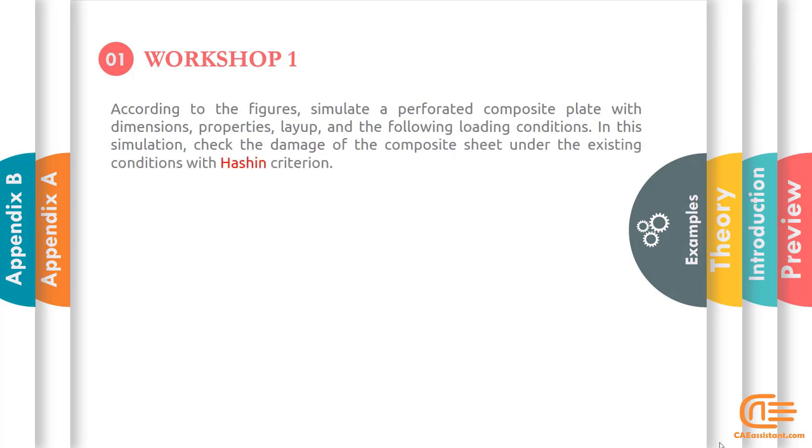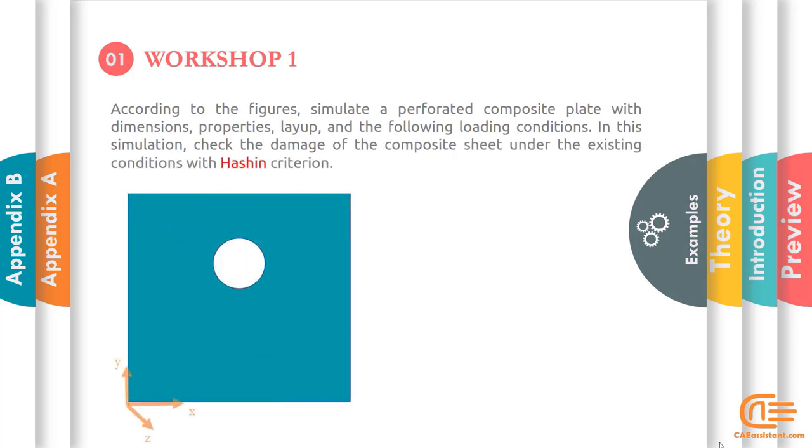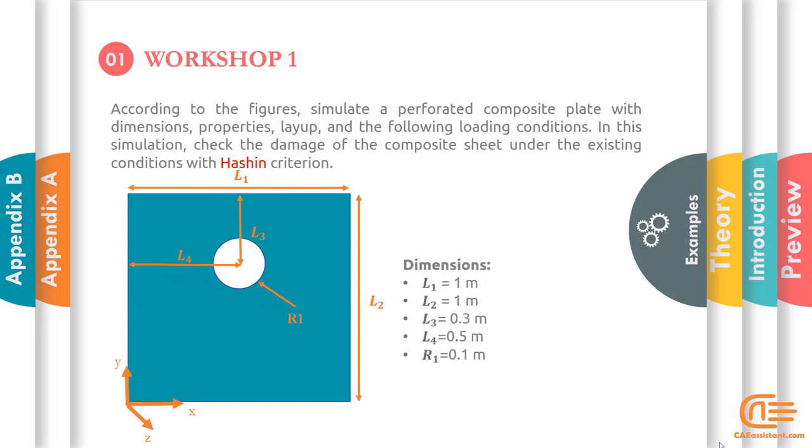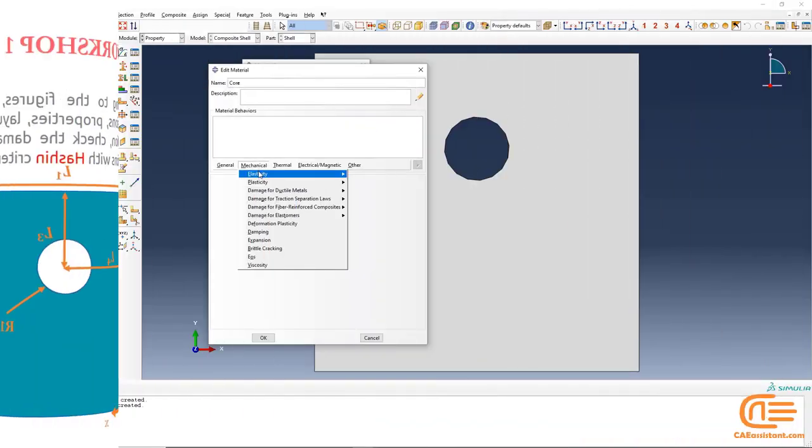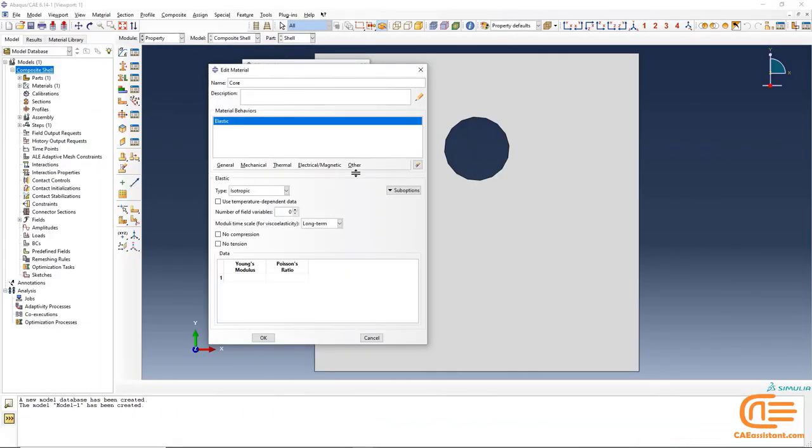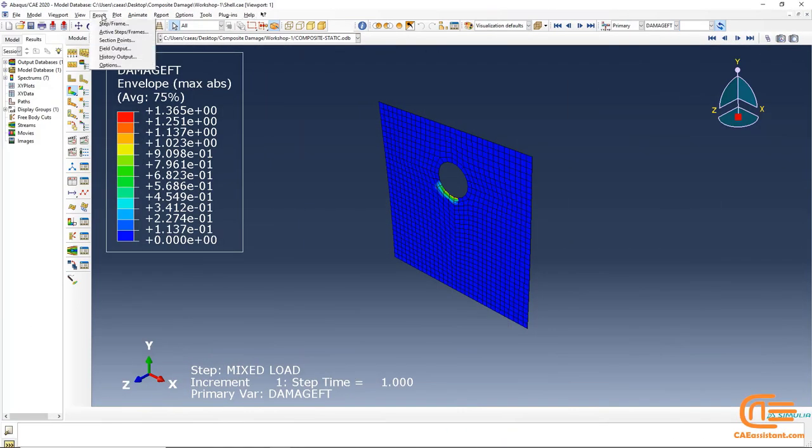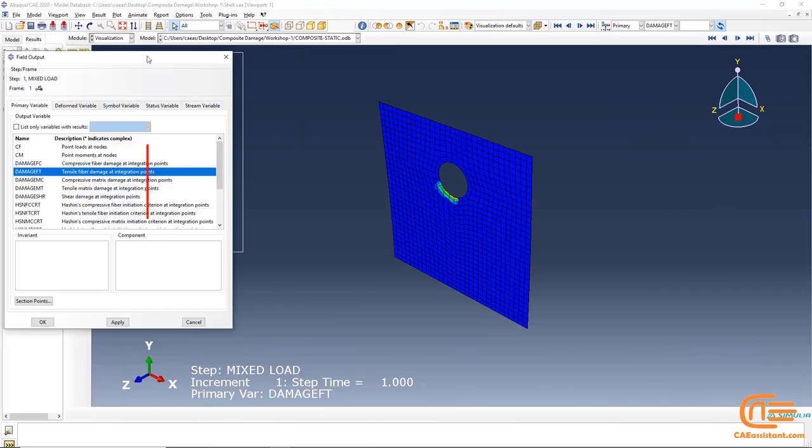In this simulation, a composite sheet under load with a certain function is damaged. In this simulation, we can easily define the values related to the core. Of course, it is clear that each of these criteria can be found in the output field section near here.